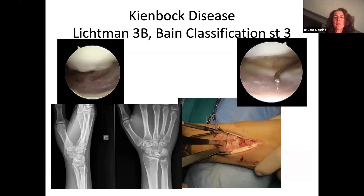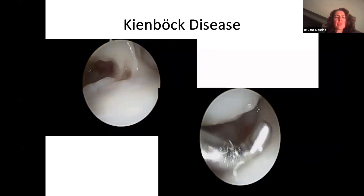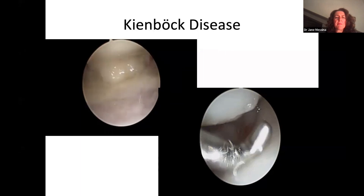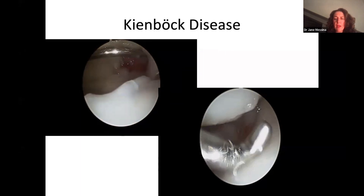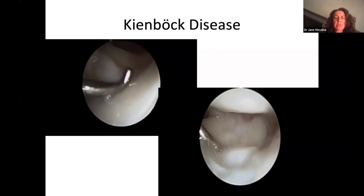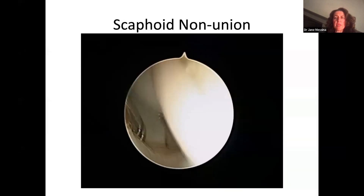In Kienbock disease, Bain has defined an arthroscopic classification to evaluate the radiocarpal and mid-carpal joints and stage the lesion. In this case of Lichtman 3B, arthroscopy shows that the cartilage on the radius is really damaged with loss of cartilage. The lunate facet is damaged, so a simple PRC would lead to arthritis again — you may need an interposition or scaphocapitate fusion. In the mid-carpal joint, the lunate cartilage shows crab-meat appearance: soft and irregular, guiding the treatment decision.